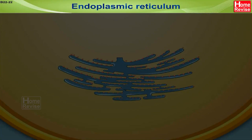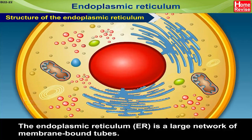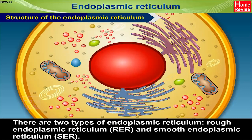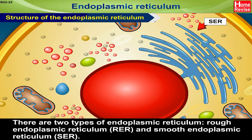Endoplasmic Reticulum. Structure of the Endoplasmic Reticulum. The endoplasmic reticulum, or ER, is a large network of membrane-bound tubes. There are two types of endoplasmic reticulum: rough endoplasmic reticulum, or RER, and smooth endoplasmic reticulum, or SER.